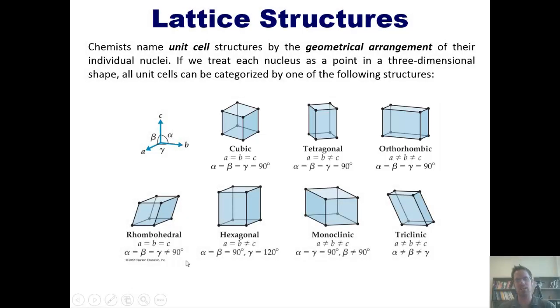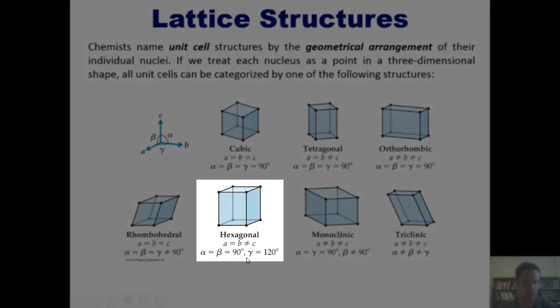What we're looking for is one that has 90 degrees at most of the vertices, but 120 at the vertices that are interior. That matches this one so far, the hexagonal. Let's see if the side lengths also match.